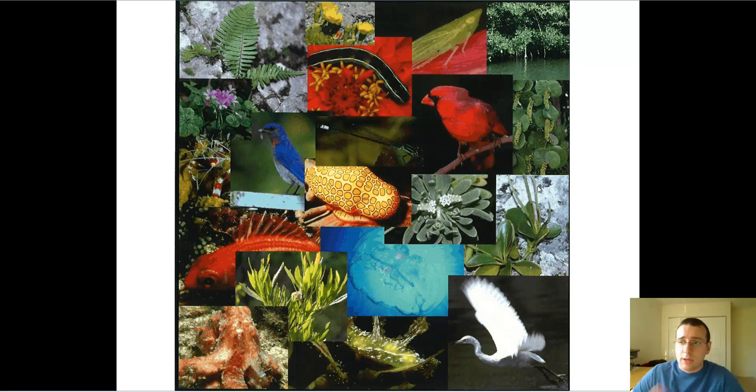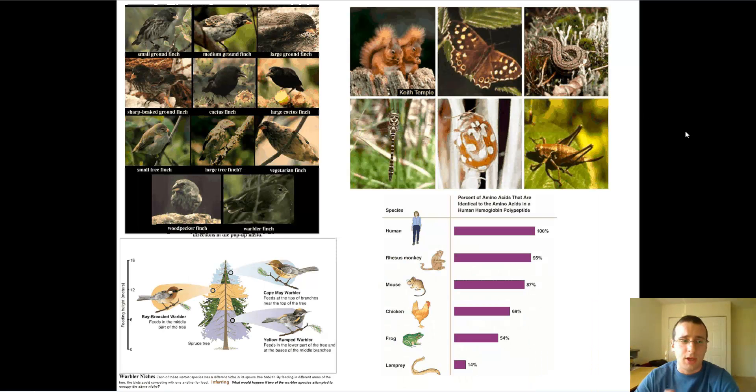Before we actually dig in and talk about taxonomy, let's review the concept of species or what is an actual species. In other words, how do you differentiate the great variety of life? Why is one thing different from the other and how can you tell that difference? Well, ecologists use four different ways or biologists use four different ways to classify a different species.